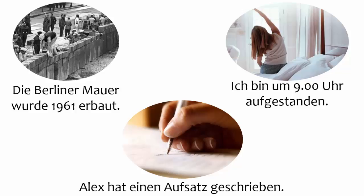In the image at the bottom, we want to say that Alex wrote a paper. The first step is to ask yourself whether Alex did the action. The answer is yes, so you go on to the second step, which is to ask yourself whether the action represents a change of state or position for Alex. The answer is no — Alex didn't move or become something different — so the correct helping verb is haben.